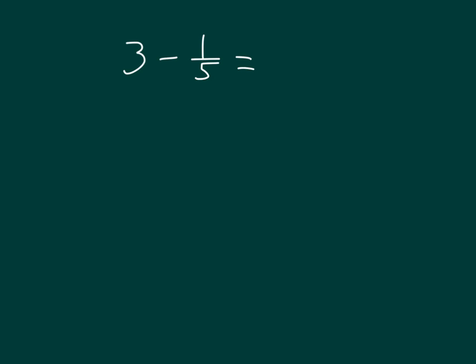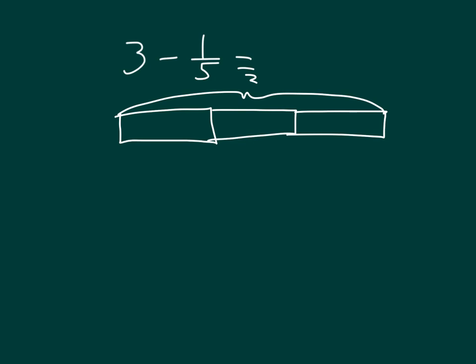Here we have 3 minus 1 fifth. Let's go ahead and draw the 3 wholes first. There's 1, 2, and 3. Let's label it. There's our 3.